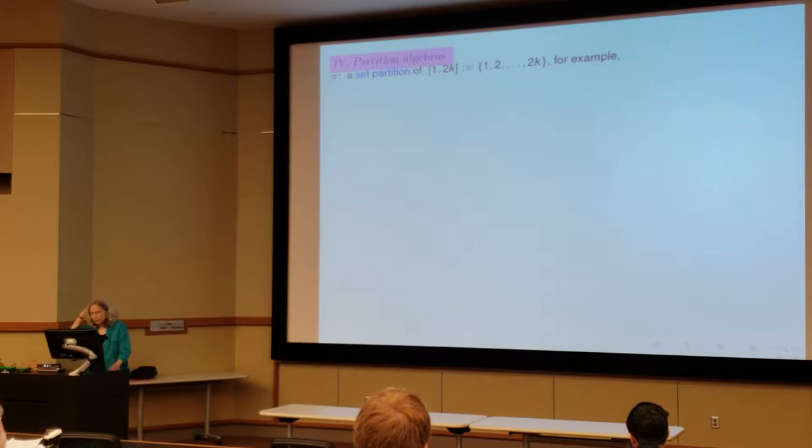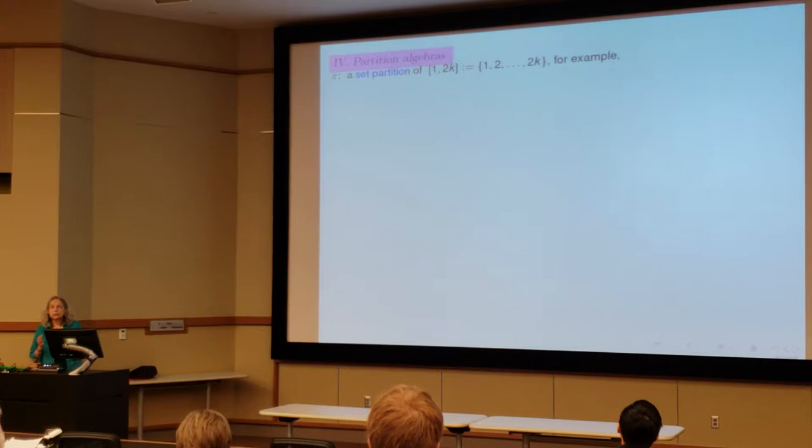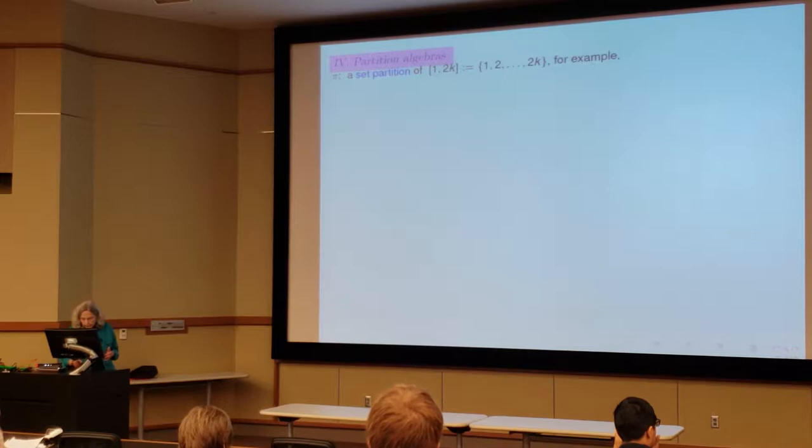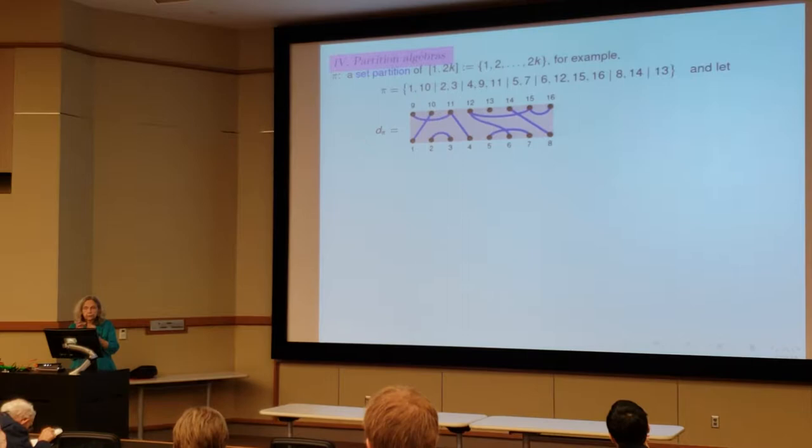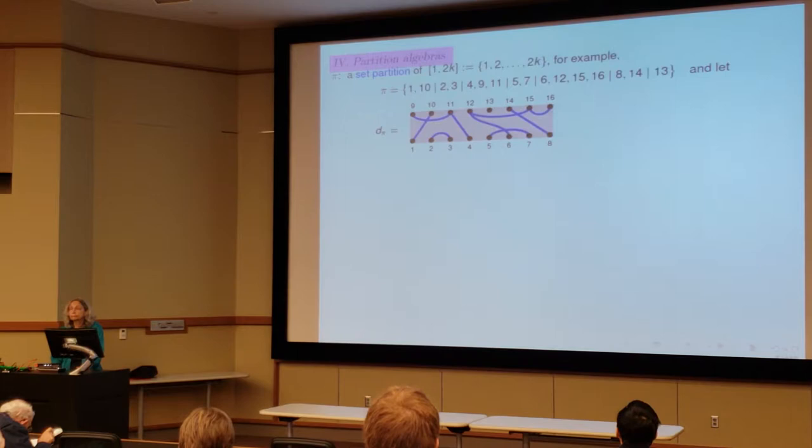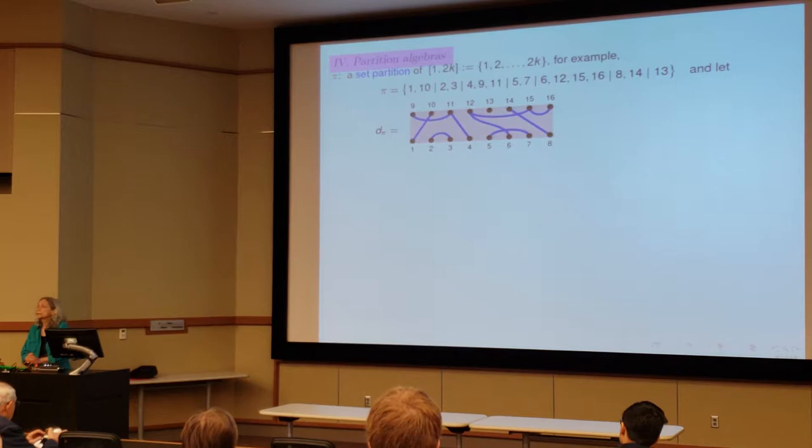So, these aren't what you think they are. The partitions are actually set partitions. So you have a set of 2K size, and you're partitioning it into non-empty disjoint subsets. There's a set partition where I just partition the numbers from 1 up to 16 into various subsets. And then I want to think about that diagrammatically where I just connect things that are in the same block. And it's not going to matter how you connect them. The important thing is that things in the same block are connected somehow.